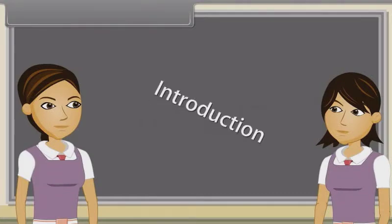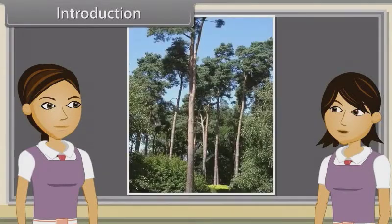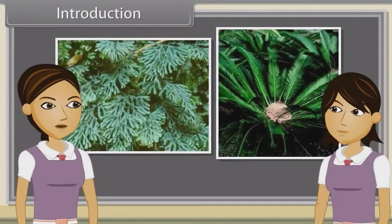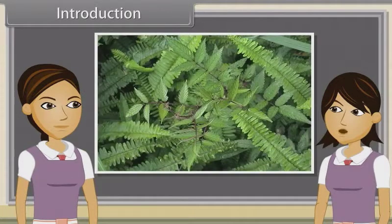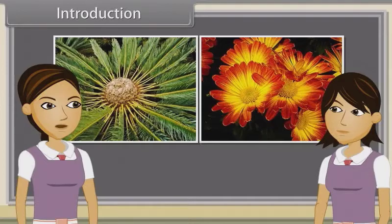Introduction. As we have already discussed earlier, land plants are divided into Thallophyta, Bryophyta, and Tracheophyta. Tracheophyta includes vascular plants. These vascular plants are Pteridophytes, Gymnosperms and Angiosperms. We have already discussed Pteridophytes. Now we are going to study Gymnosperms and Angiosperms.